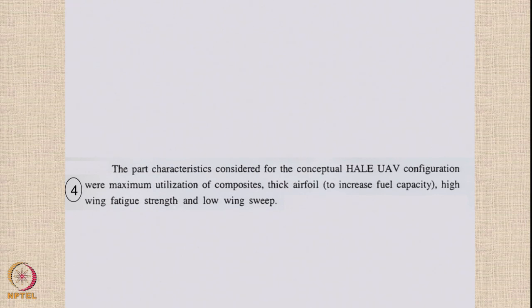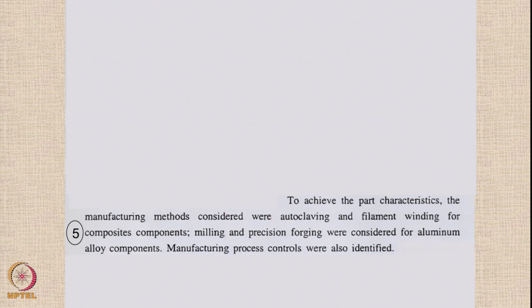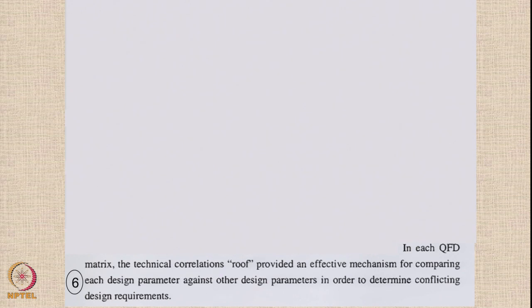At the next level, part characteristics were identified — such as utilization of composites, using thick airfoils to increase fuel capacity, high wing fatigue strength, and low wing sweep. These were considered useful concepts and investigated further. To achieve these part characteristics, the manufacturing methods considered included autoclaving and filament winding for composite components, and milling and precision forging for aluminum alloy components. Some manufacturing process controls were also identified.